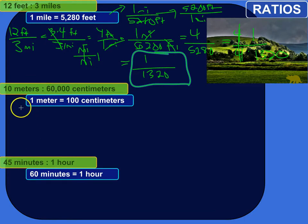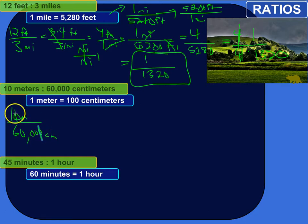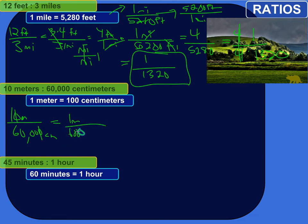Let's practice a couple more. We've got a ratio of 10 meters to 60,000 centimeters. Let's write that as a fraction. Before we go further, let's deal with the numbers part to make things a little easier. We can pull a 10 out of both — basically eliminate a zero off the end of both. So this is equivalent to 1 meter over 6,000 centimeters — the same ratio.